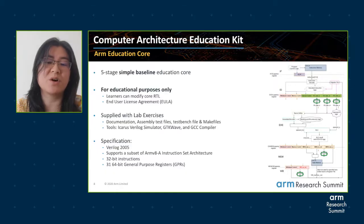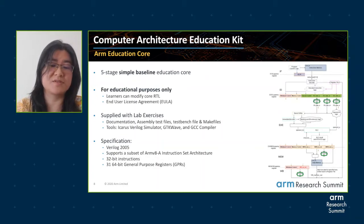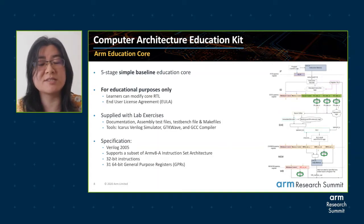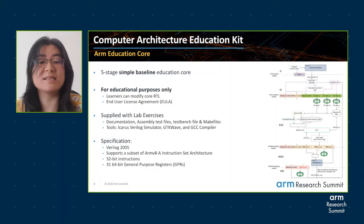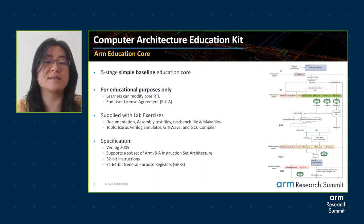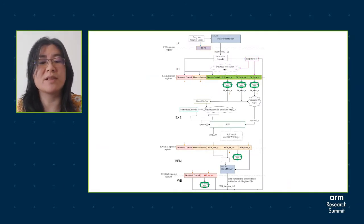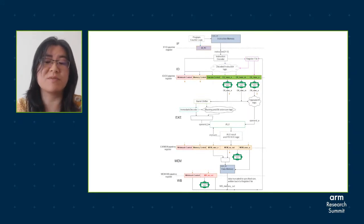The ARM Education Core comes along with documentation, assembly test files, test bench files, and make files. The lab exercises also include step-by-step instructions based on the usage of the free Icarus Verilog simulator, GTKWave to view waveforms, and the GCC compiler. In terms of specification, the ARM Education Core is written in Verilog 2005 and implements a subset of the ARMv8-A A64 instruction set architecture. It is a 64-bit architecture that processes 32-bit instructions. The diagram on the right shows a brief overview of the core data path from one of the lab exercises.